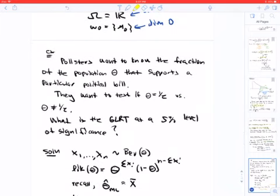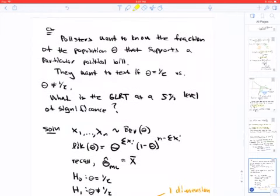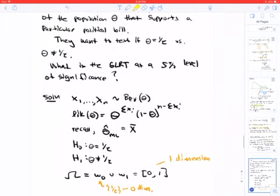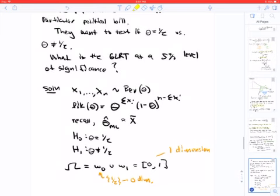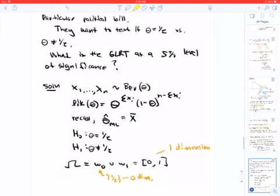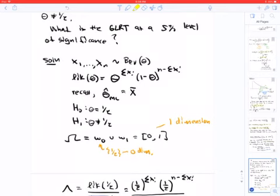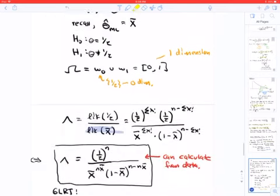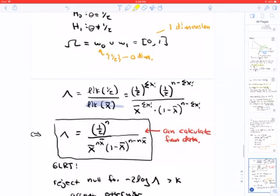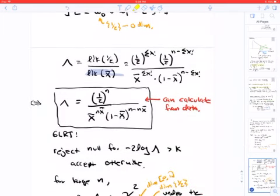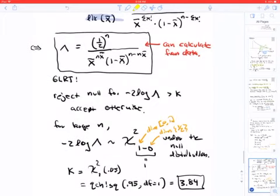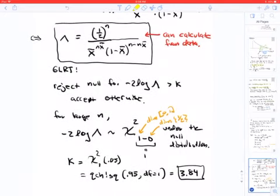So here's another example. Pollsters want to know the fraction of the population theta that support a particular bill. They want to test if theta is a half versus theta is not a half. We want to find the generalized likelihood ratio test at a five percent level of significance. So we notice that our x1, xn are Bernoulli, and we just write out then what lambda is.